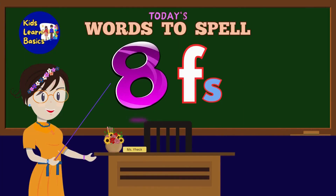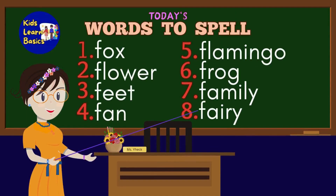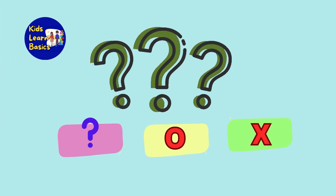We're done spelling 8 words starting with F. Good job! Just keep on watching this video and soon you'll learn and memorize the spelling of these words starting with F. You may say the missing letters to complete the words. Let's try now.